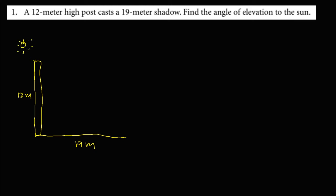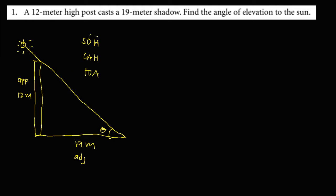So if this is the sun, the angle of elevation is always with the horizontal line. So if this is your line of sight, the angle is always with the horizontal line. Now based from the given, if this is our reference angle, this side is the opposite and this side is the adjacent. Using this mnemonic — SOH-CAH-TOA — since the given is opposite and adjacent, we're going to use tangent theta, which is opposite over adjacent.